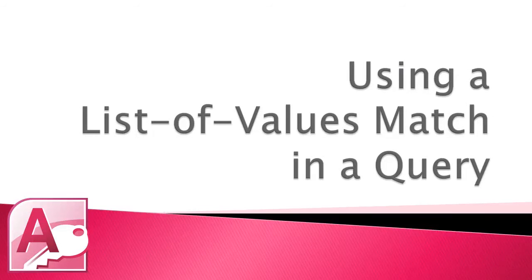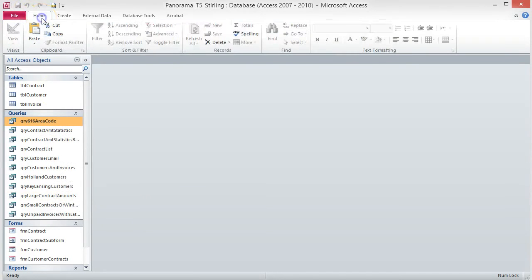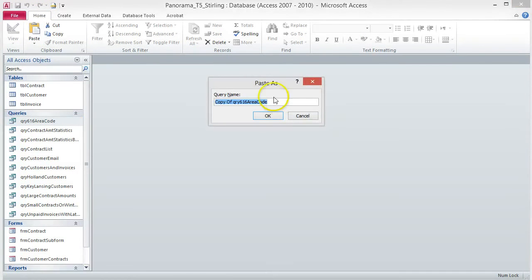Using a List of Values Match in a Query. We're going to create a query using the In comparison operator. This allows you to define a condition with a list of two or more values for a field — if a record's value matches any value from the list, the record is displayed. In this query, we want to see customers who live in Holland, Rockford, or Sagatek. Create a copy of the 616 area code query by right-clicking and choosing Copy. When you paste it, change the name to QRY Holland, Rockford, Sagatek Customers. Open the query and change to Design View.